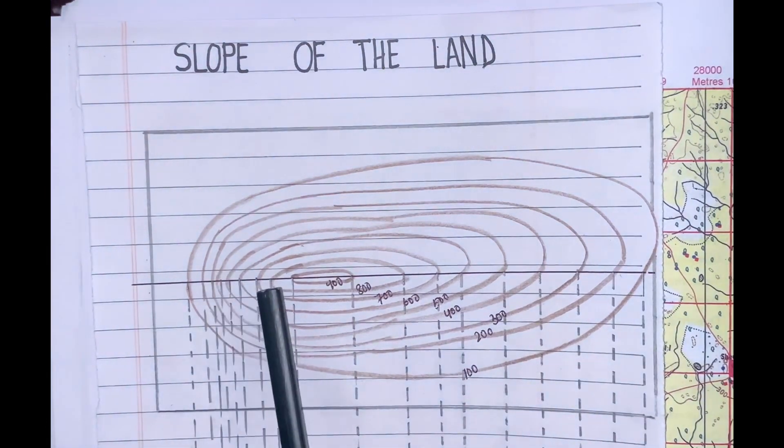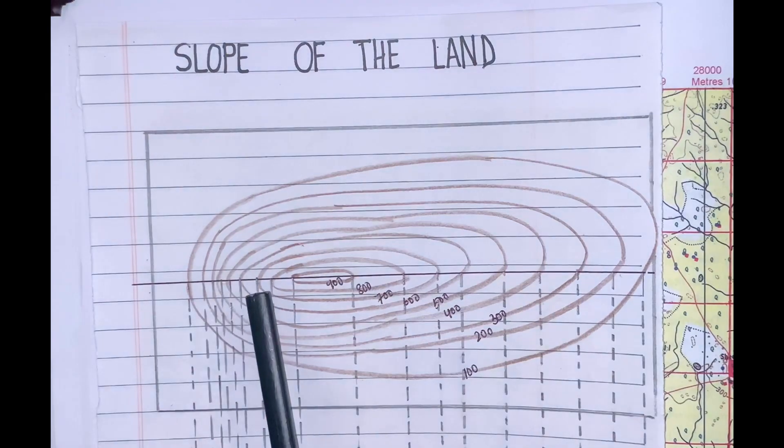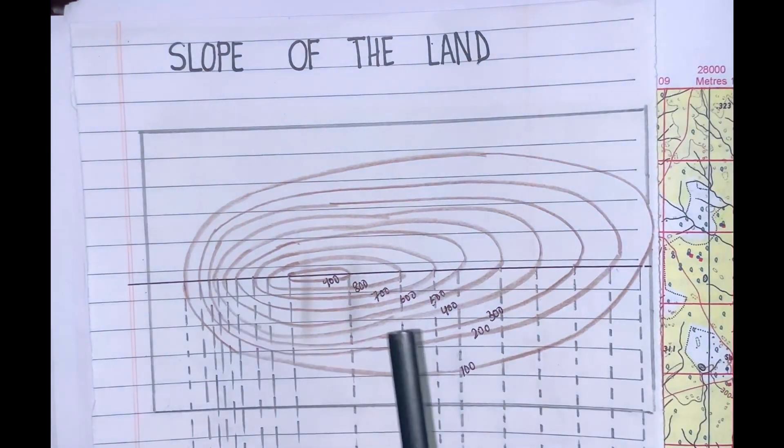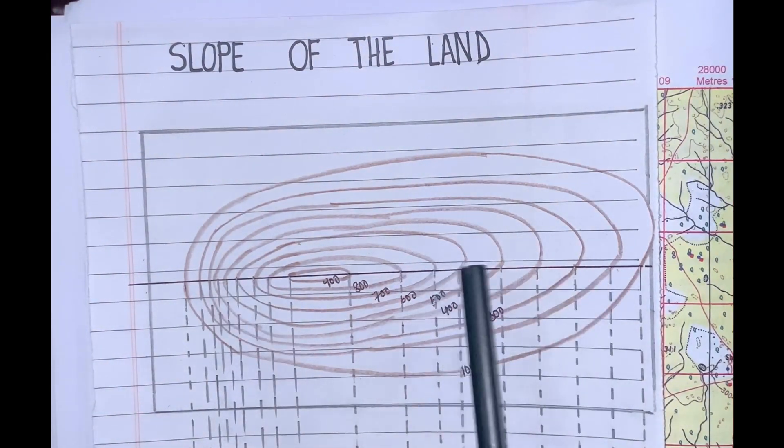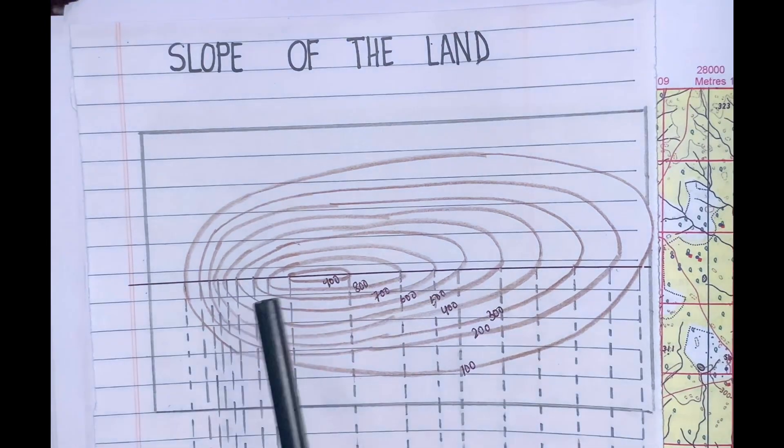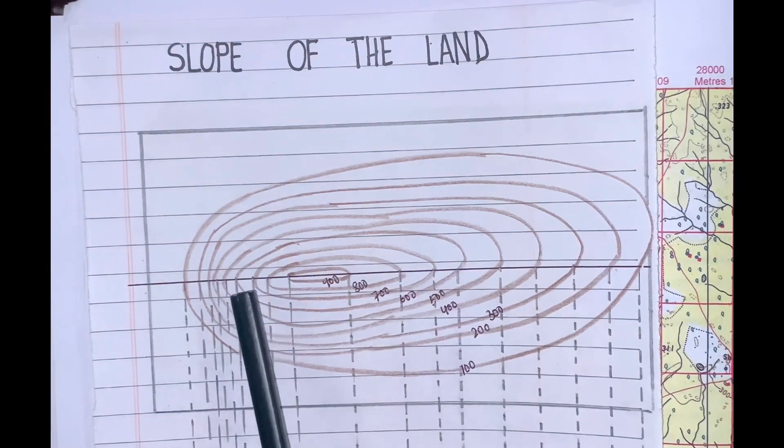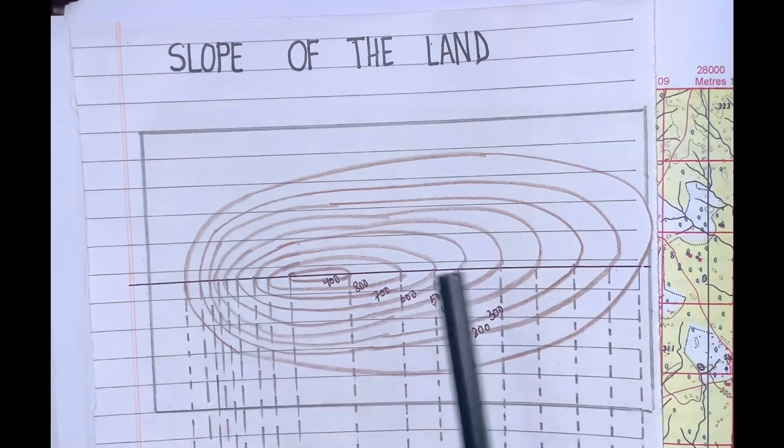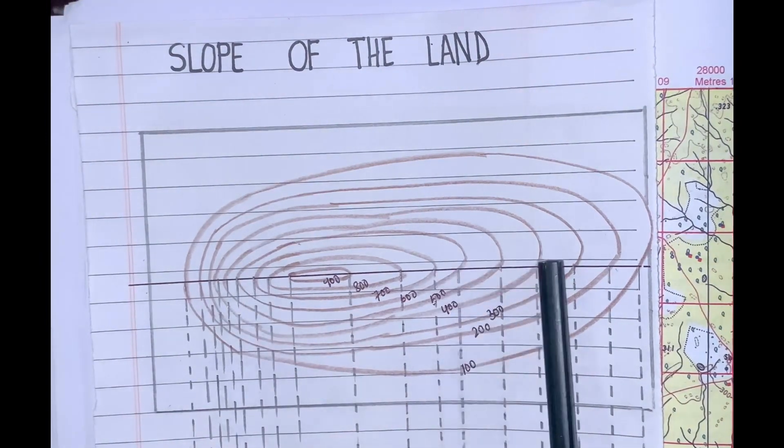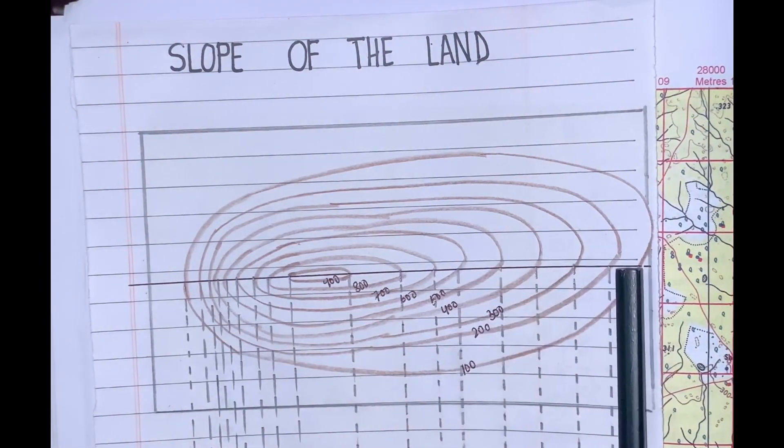In this diagram you can see I have drawn contour lines. On the left hand side, all the lines are very close to each other. Whereas on the right hand side, contour lines are far from each other. Closely spaced contour lines indicate steep slopes while widely spaced lines represent gentle slopes.